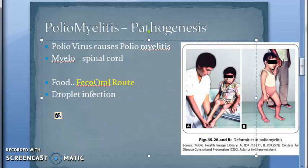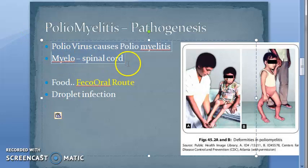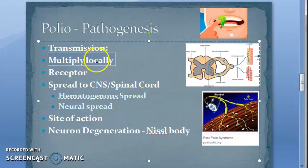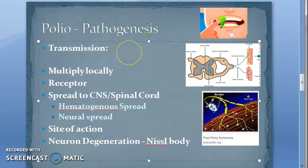Even conjunctival contact can transmit the virus — that shows how powerful this virus is. Polio virus causes poliomyelitis; 'myelo' means spinal cord, so the spinal cord is affected. In the textbook, pathogenesis is explained under these headings: transmission, local multiplication, receptor, spread to the spinal cord and CNS, site of action, and neuron degeneration.